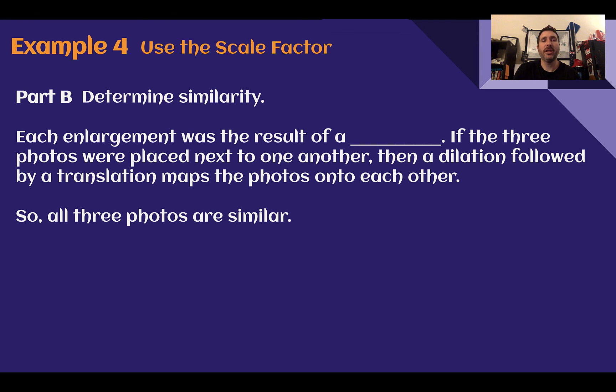Next, let's determine if they are similar. Each enlargement was the result of a dilation. Since we just dilated it and then dilated it again, we would be able to map one onto the other just by using dilations. So since we were able to map one to the other using dilations, and then if we needed to, translations or rotations, etc., we could get one to the other. These photos would be similar. Which is good, since if they're actually photos, we would want them to be larger and not distorted, which is what would happen if they were not similar.